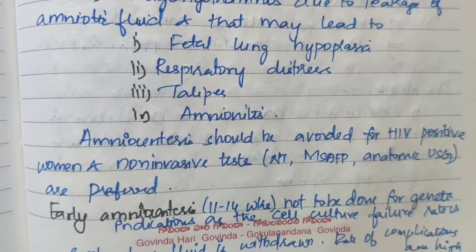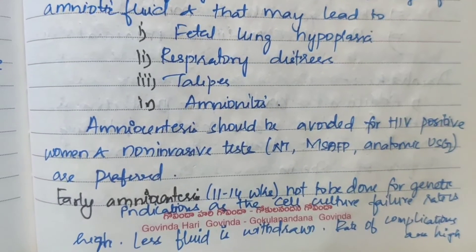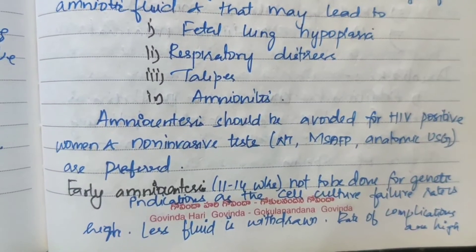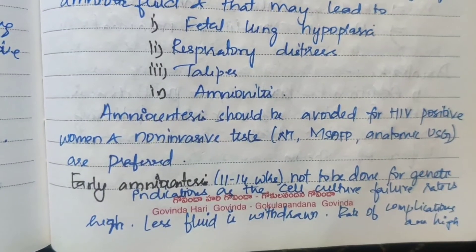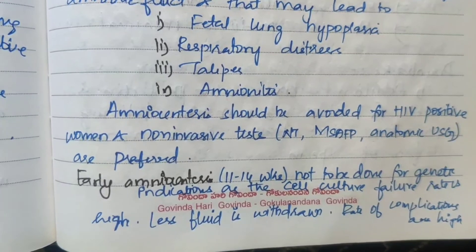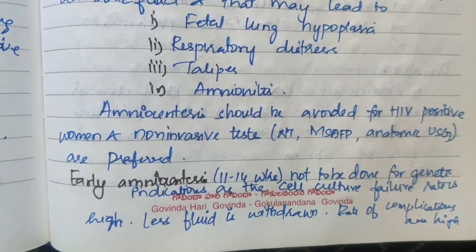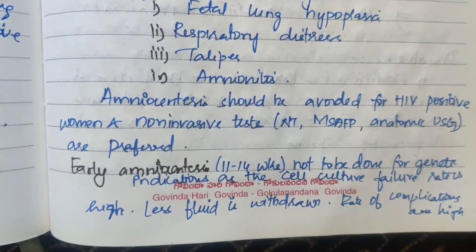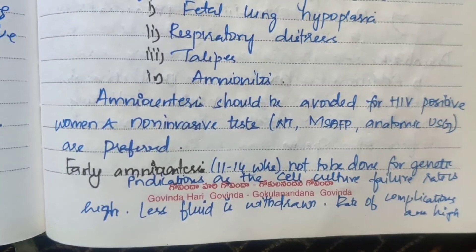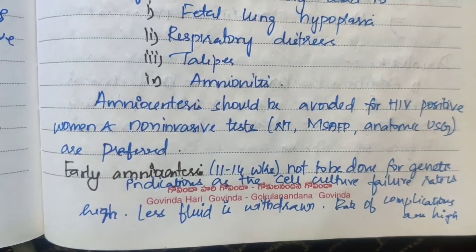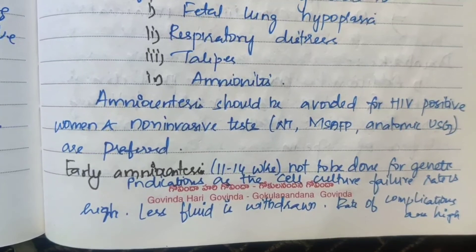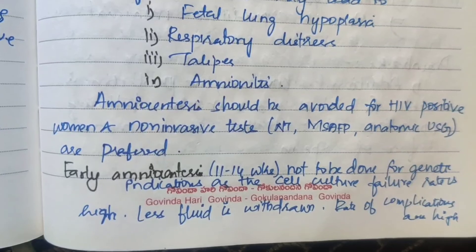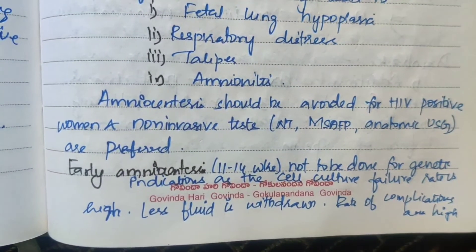Special considerations: amniocentesis should be avoided in HIV-positive women, and non-invasive tests are preferred — for example, non-stress test, MSAFP, and anatomic ultrasound. Early amniocentesis at 11-14 weeks is not recommended for genetic indications as the cell culture failure rate is high, less fluid is withdrawn, and the rate of complications is higher.